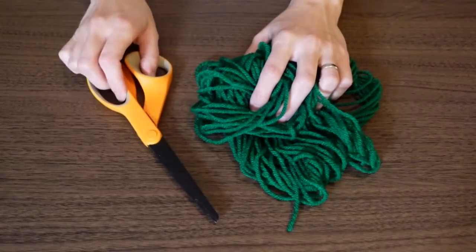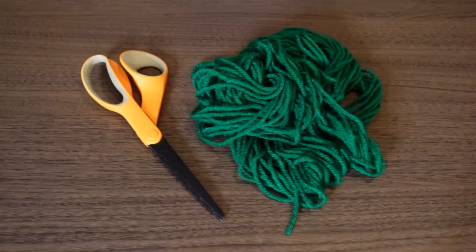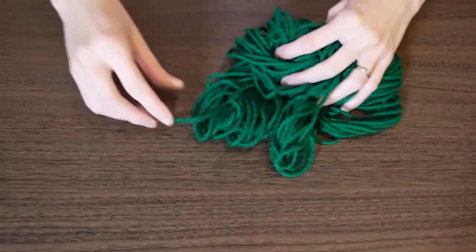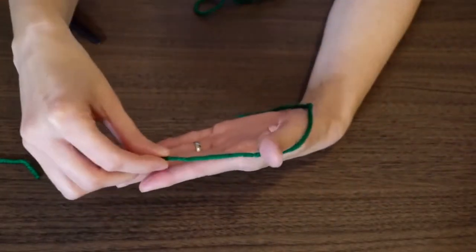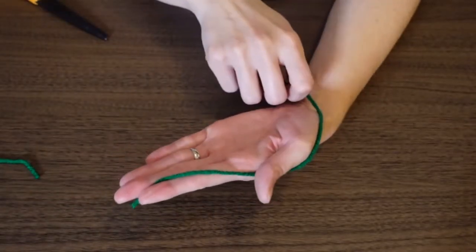Now to make a yarn tassel, all you need is some yarn and scissors. I had this green yarn left over from a past project, but you can use whatever color of yarn you like. Now I start by cutting a piece of yarn that's about 10 inches long. I just kind of eyeball it.